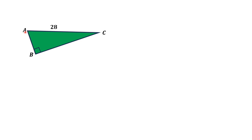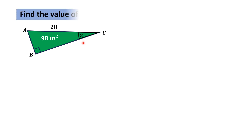Moreover, the hypotenuse AC is 28 units, and the area of this right triangle is 98 square meters. By this given data, we have to find the angle at point C, which is let's call alpha. So by this data, we have to evaluate the value of angle alpha.